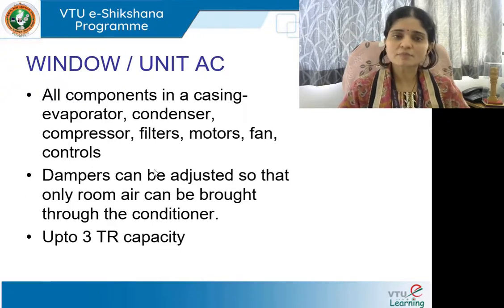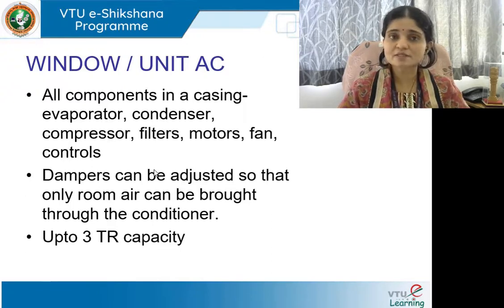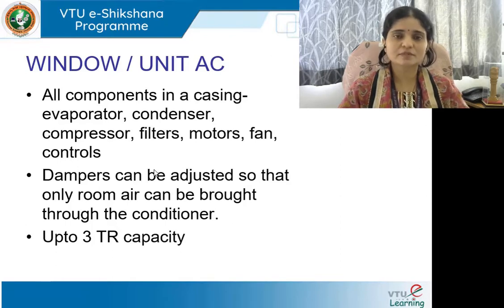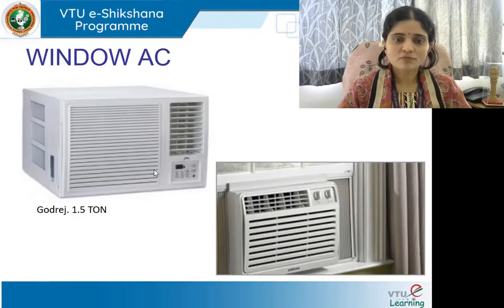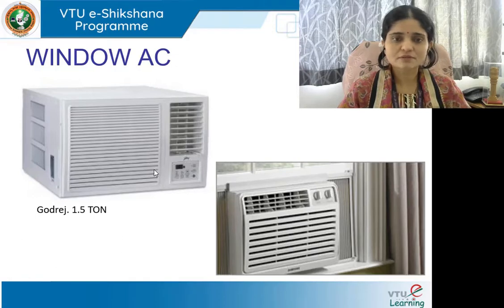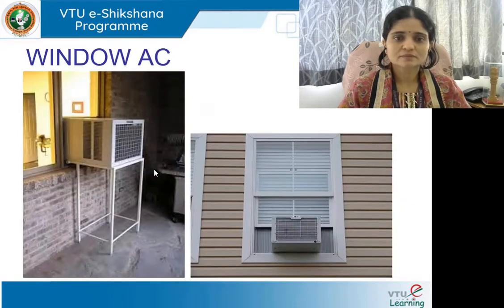Window ACs come up to 3 tonnage — 3 TR, ton of refrigeration, which is the unit for refrigeration and AC. 1 ton and 1.5 ton capacities are available, all sitting on the window sill.